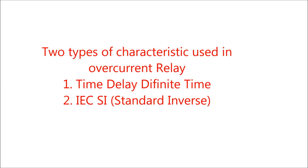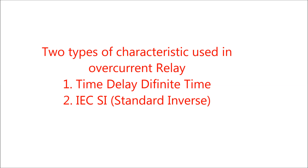Two types of characteristics are used in overcurrent relays in substations: one is the definite time delay, and the second is IEC Standard Inverse (SI). The characteristic for IEC Standard Inverse is given by: T = TMS × (0.14 / (PSM^0.02 − 1)), where I divided by IS equals PSM.